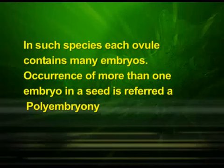More often, as in many citrus and mango varieties, some of the nucellar cells surrounding the embryo sac start dividing, protrude into the embryo sac and develop into embryos. In such species, each ovule contains many embryos. Occurrence of more than one embryo in a seed is referred to as polyembryony.